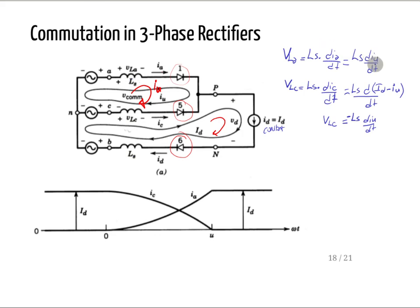That equation makes physical sense: when you add the two currents they must always equal a constant ID. So if one is 1 amp, the other is 9 amps; if this is 2 amps, the other is 8 amps. The equation captures exactly that relationship.